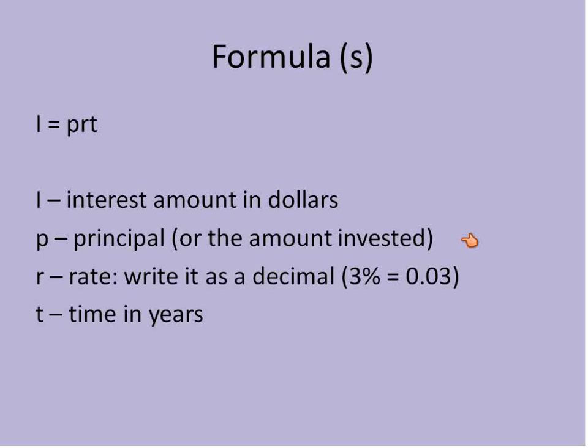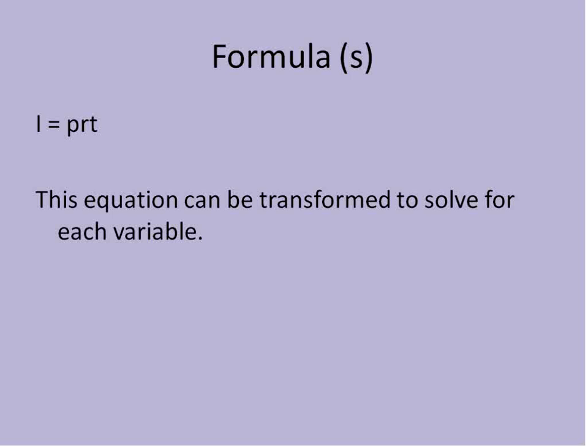The rate is often written as a decimal, but you will usually have to convert it from a percentage to a decimal. As in this example, 3% is equal to 0.03. And time is always measured in years in this equation. So we'll see some variations of this, but that's the basics of it.